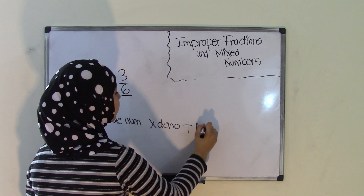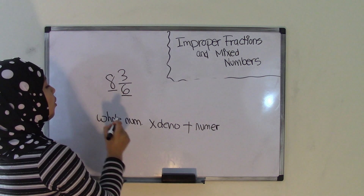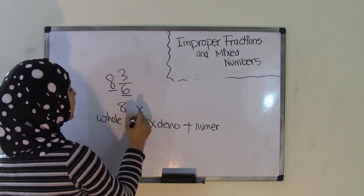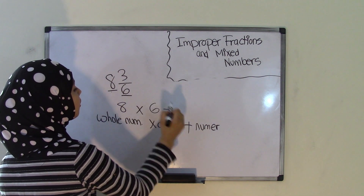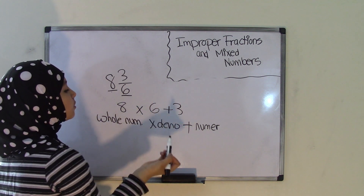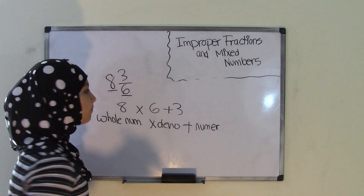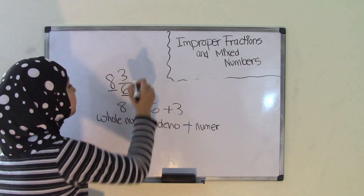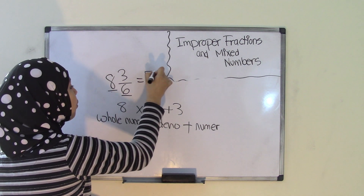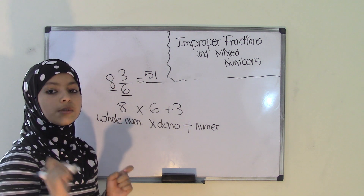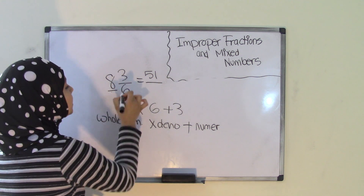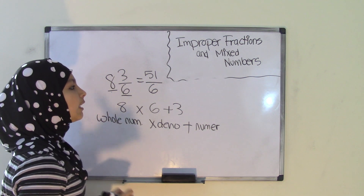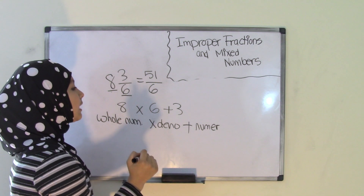So whole number times the denominator: 8 times 6, plus the numerator of 3. 8 times 6 is 48, plus 3 equals 51. That answer becomes our numerator for our improper fraction. So the numerator is going to be 51. And remember, your denominator always remains the same — so 6. That means the mixed number 8 and 3 over 6, converted into an improper fraction, equals 51 over 6.